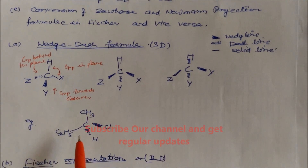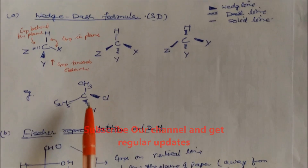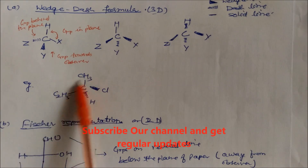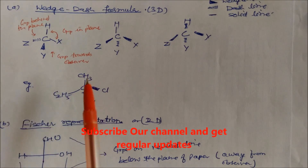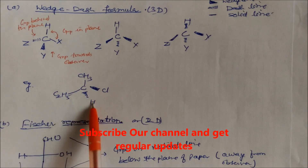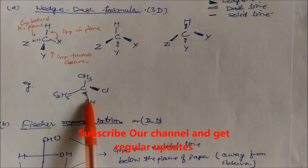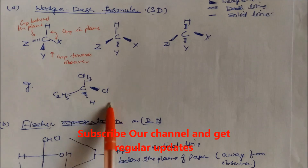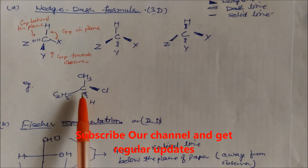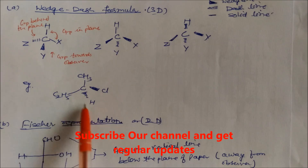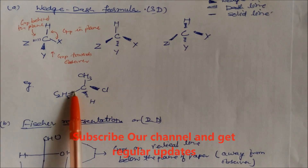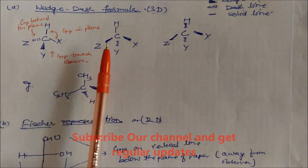For example, in a compound with methyl and C2H5 along the paper plane, Cl is above the carbon — pointing toward the observer — while hydrogen is below the carbon, below the plane of the paper. So Cl is here and hydrogen is below the carbon. This gives us the three-dimensional representation using the wedge-dash formula.